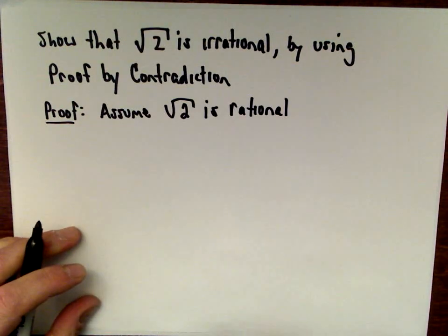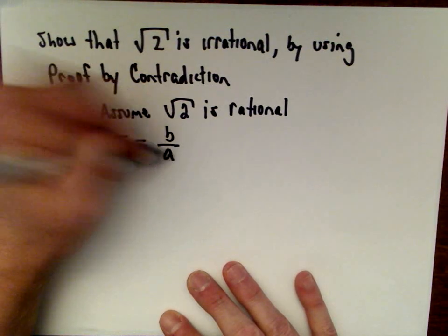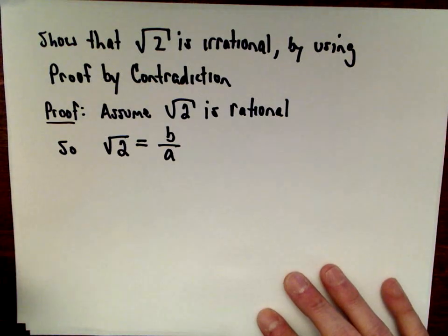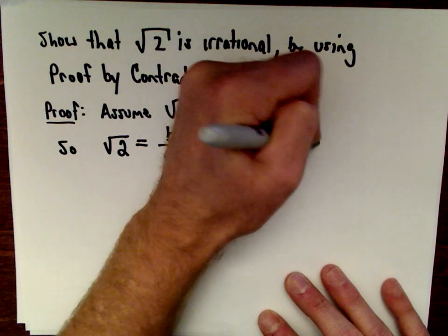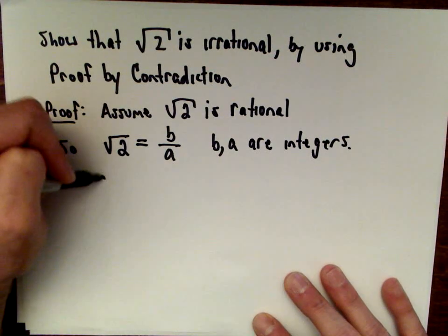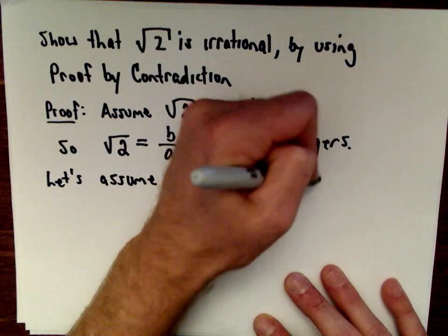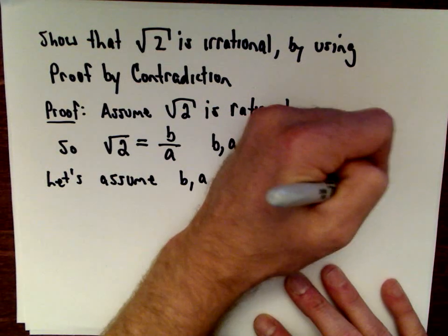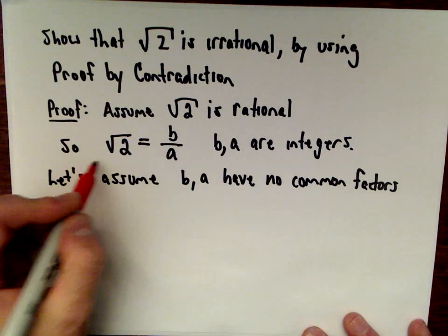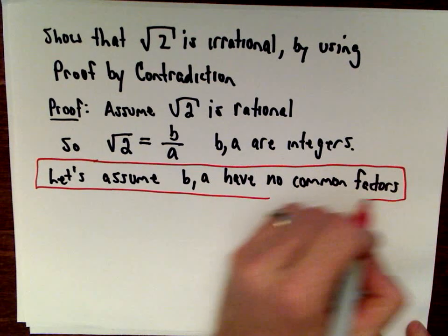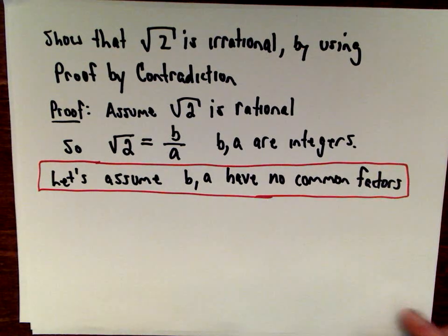What does it mean for a number to be rational? It means we can write our number as a ratio of integers. So we can write the square root of 2 as b divided by a, where b and a are integers. And we can also assume that b and a have no common factors, because we can always just reduce the fraction. So let's assume this fraction is in reduced form — b and a have no common factors. This is ultimately what we're going to contradict.